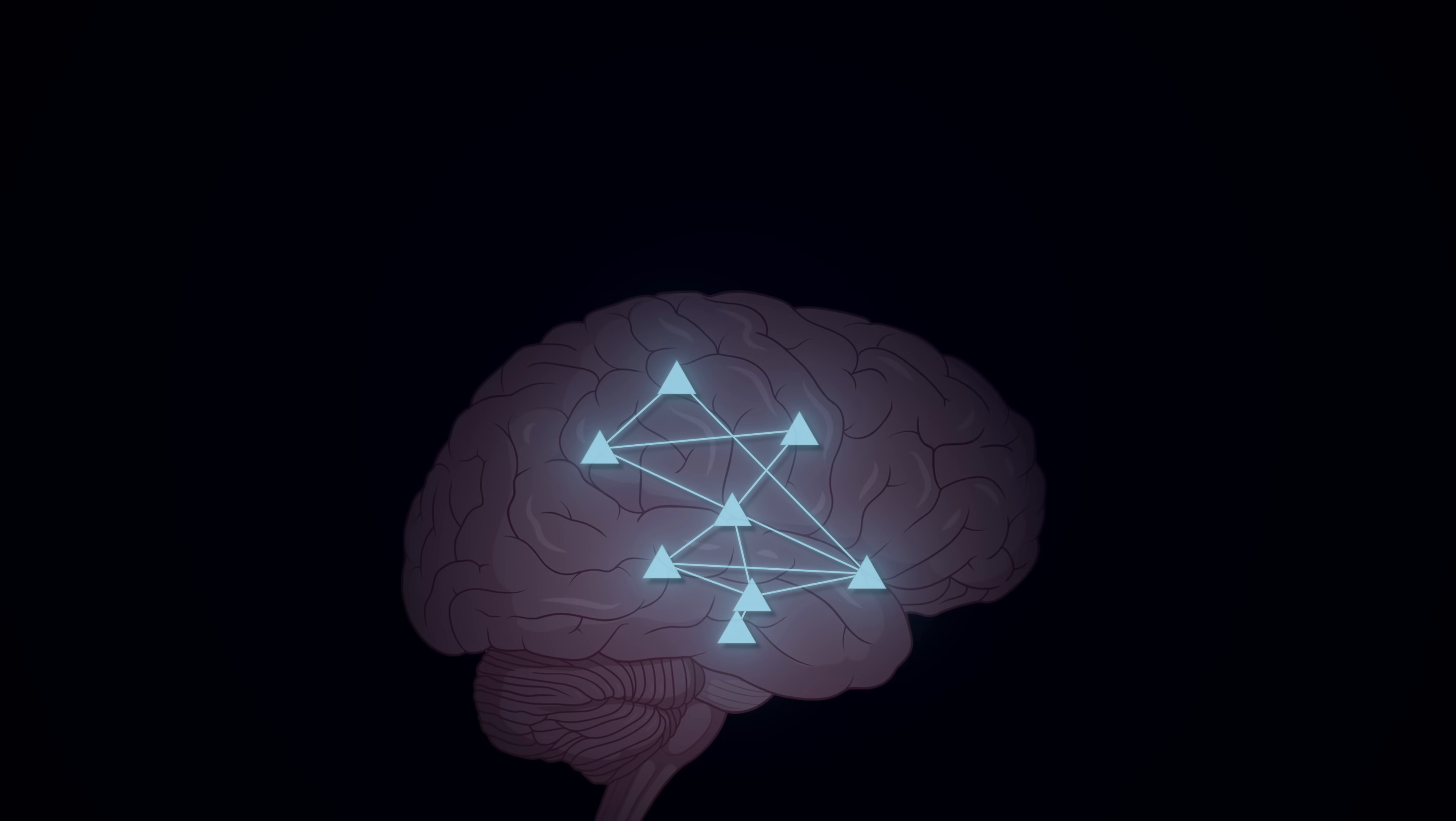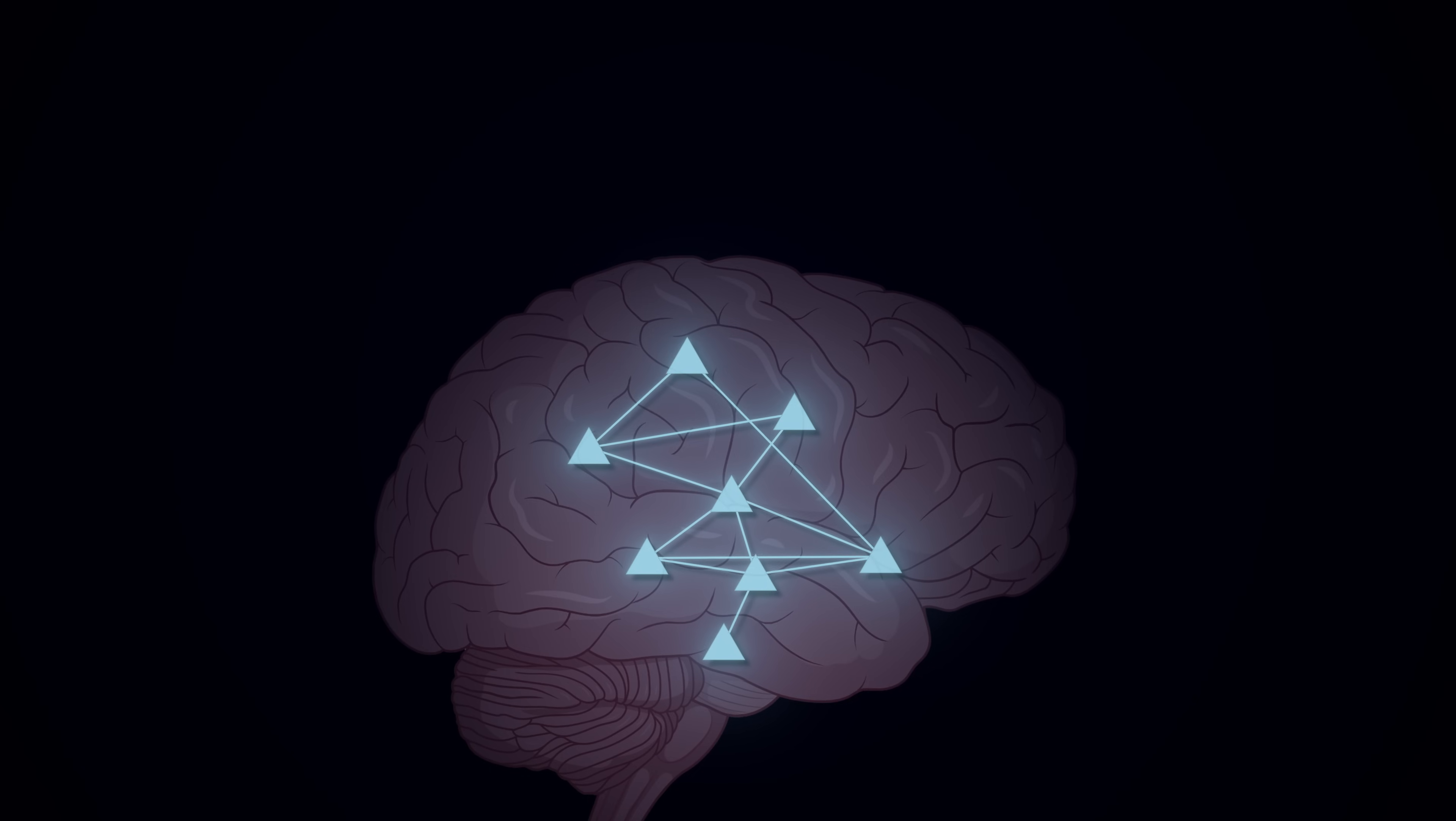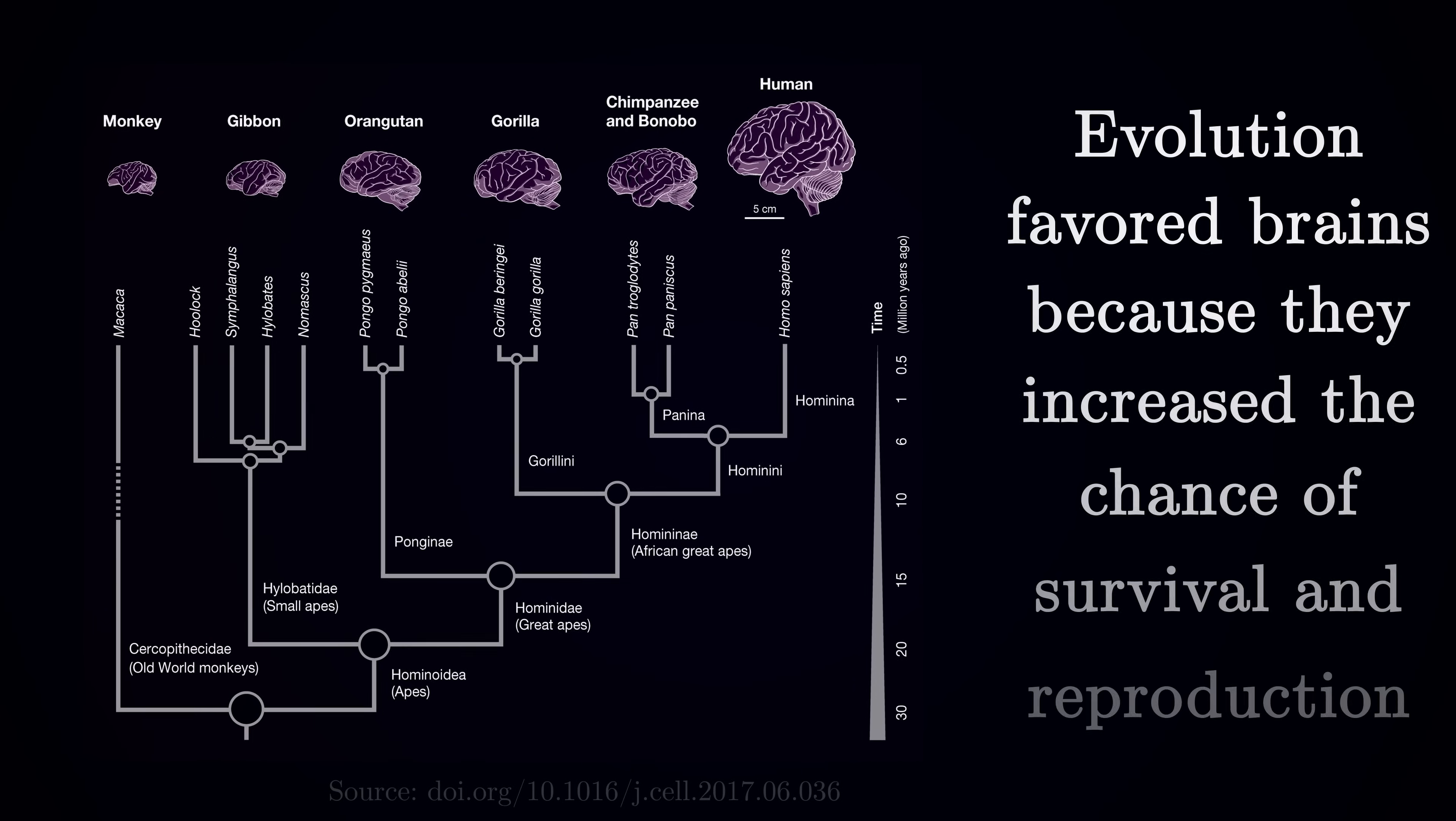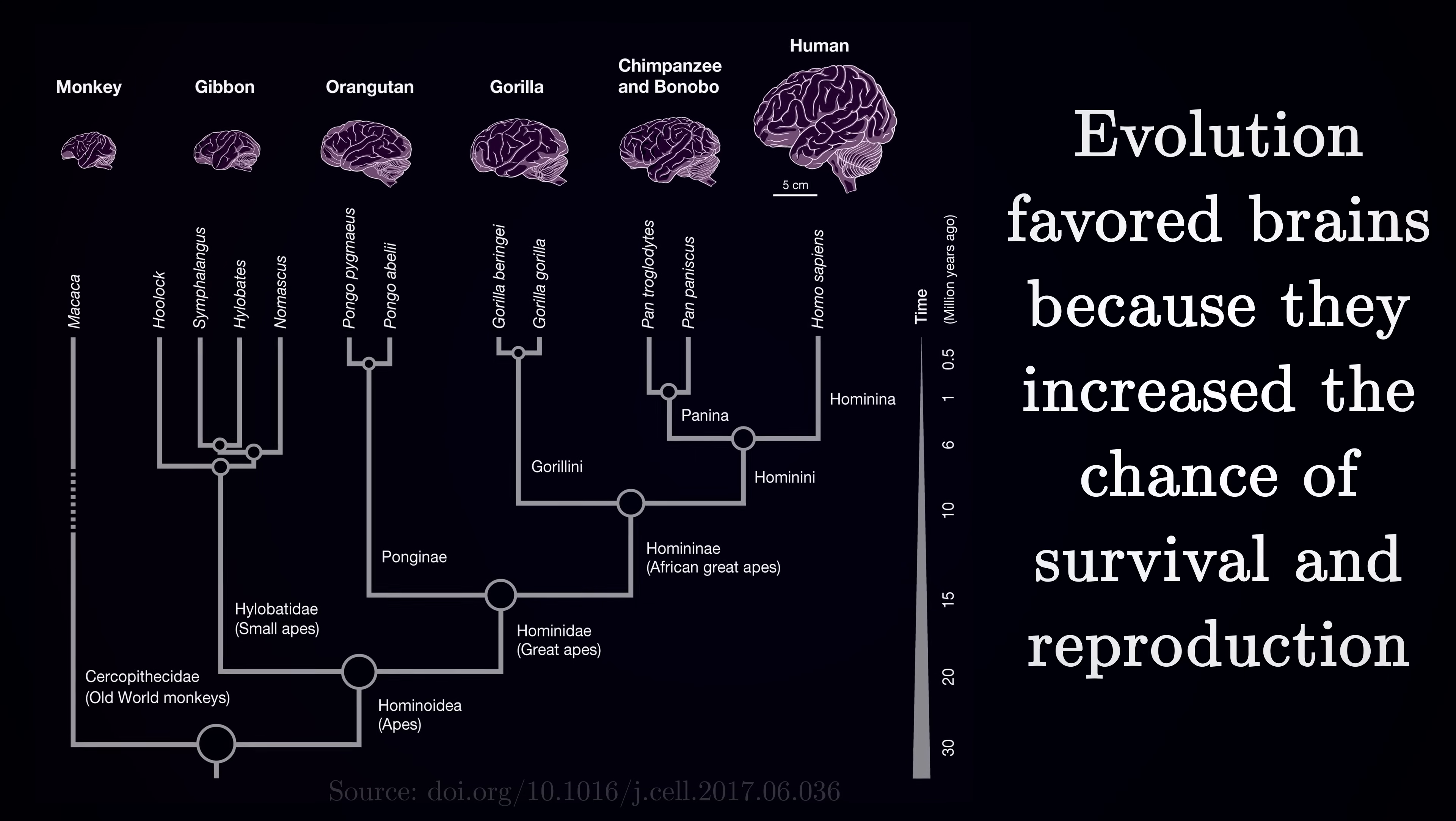But first, let's go back to the beginning. To understand why our brains work this way, we need to look at the fundamental problem they evolved to solve. The main purpose of the brain, like any trait favored by evolution, is to increase the chances of survival and reproduction.